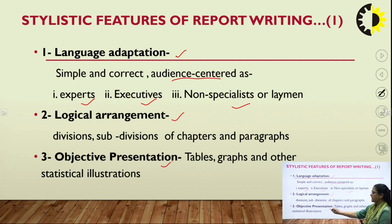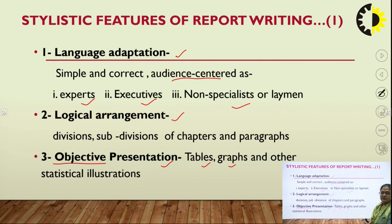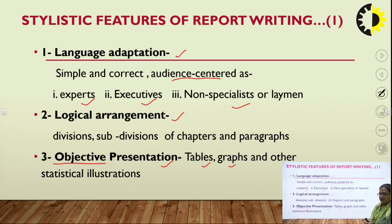The third thing is objective presentation. This word 'objective' is very important, very relevant, and mandatory in technical communication. Whatever we communicate should be objectively seen, objectively analyzed, and objectively presented. In reports, objective presentation is ascertained with the help of tables, graphs, charts, and other visual or statistical illustrations. We can make use of different visual illustrations like graphs to show distribution or pie charts. We have a variety of visual aids to give an objective presentation, and this is a must-have quality of all technical communication, especially written communication.